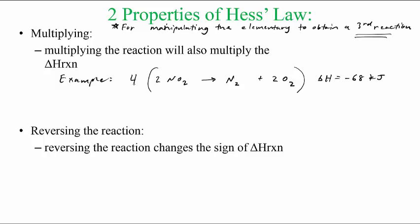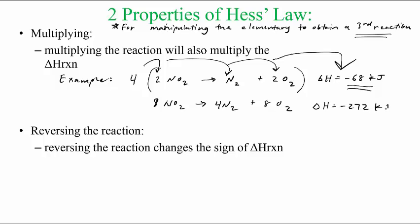So if I can multiply these by four if I need to. When do you need to? It's better when I do an example to explain that. So if you multiply each coefficient by four, then you'll get eight here, four N2s and eight O2s. This four also multiplies this right here. So if this happens four times, then the heat change should also be four times 68, which is negative 272 kilojoules.